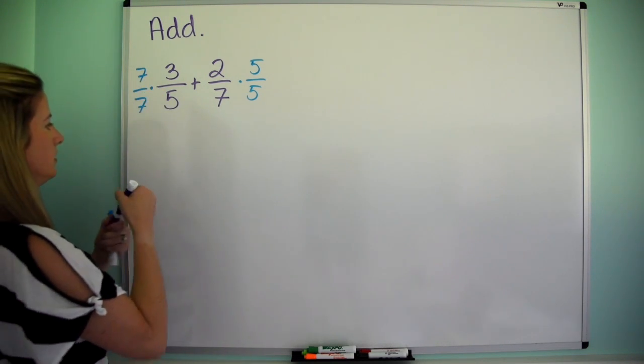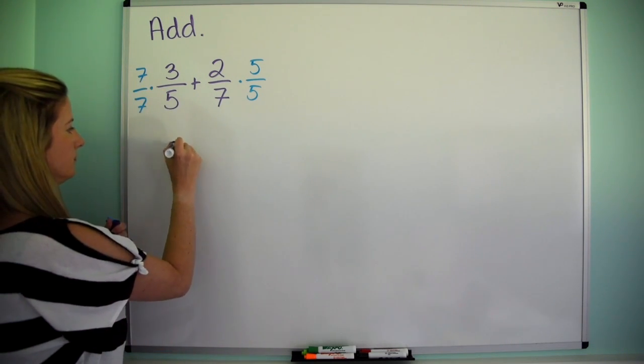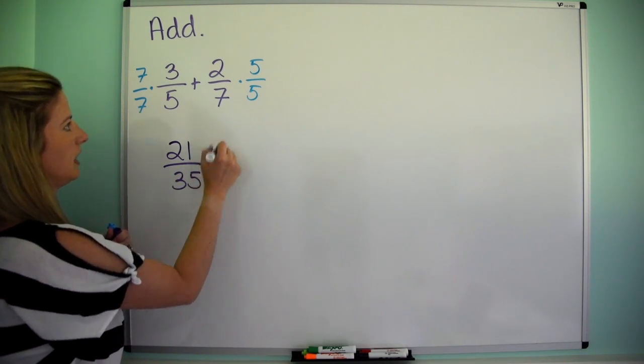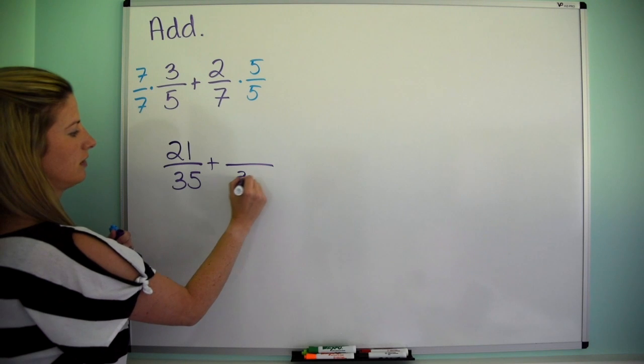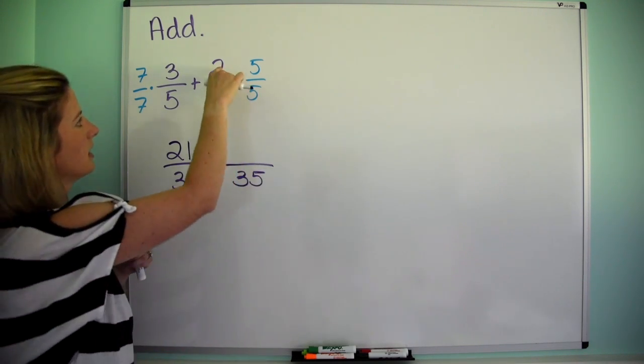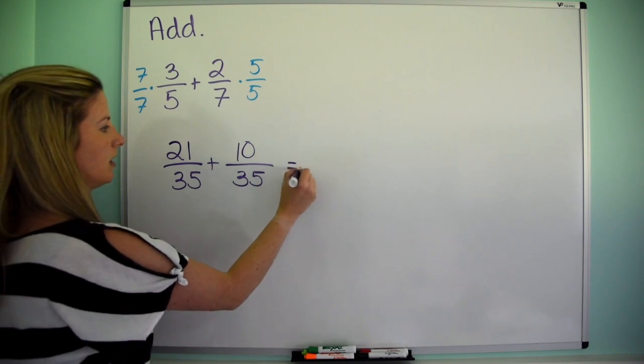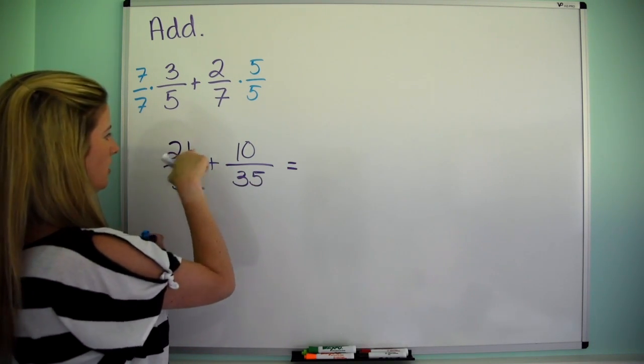So what I'm looking at now is 21 over 35. Plus, again, this is going to be over 35 because that is our common denominator. 2 times 5 is 10, so we are looking at 10 over 35.